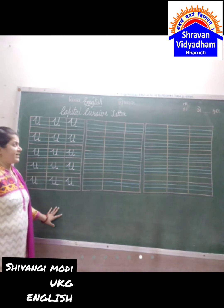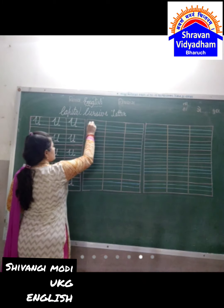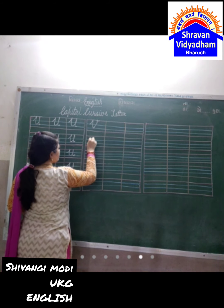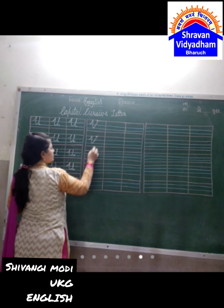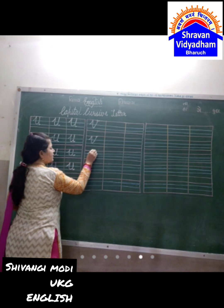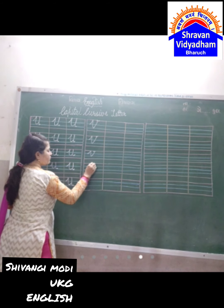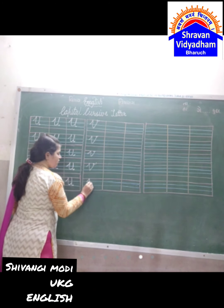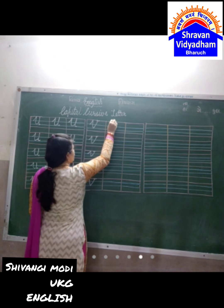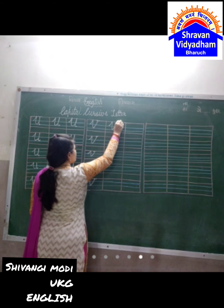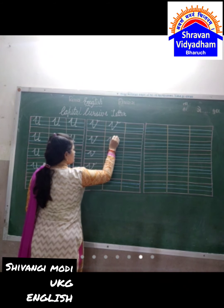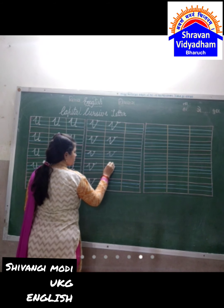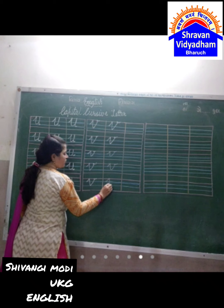Next letter is V. Slanting line, again slanting line, then slanting line, then tongue. V for When, V for Violin, V for When, V for Violin, V for Vase, V for Violin.